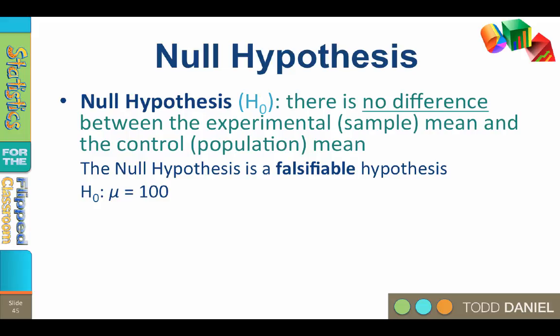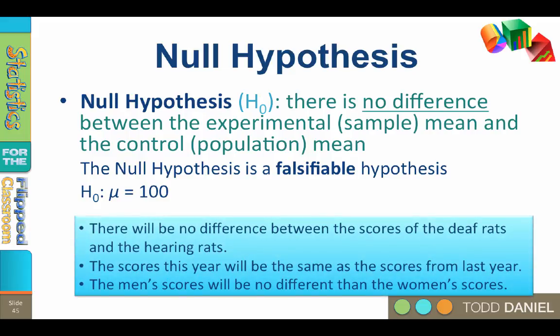So if the test mean was 95, then the true test mean was 100 minus five points of error. The sample mean poorly represents the control or population mean, but functionally they are the same. Here are ways that you could write a null hypothesis: There will be no difference between the scores of the deaf rats and the hearing rats. The scores this year will be the same as the scores from last year. The men's scores will be no different than the women's scores.